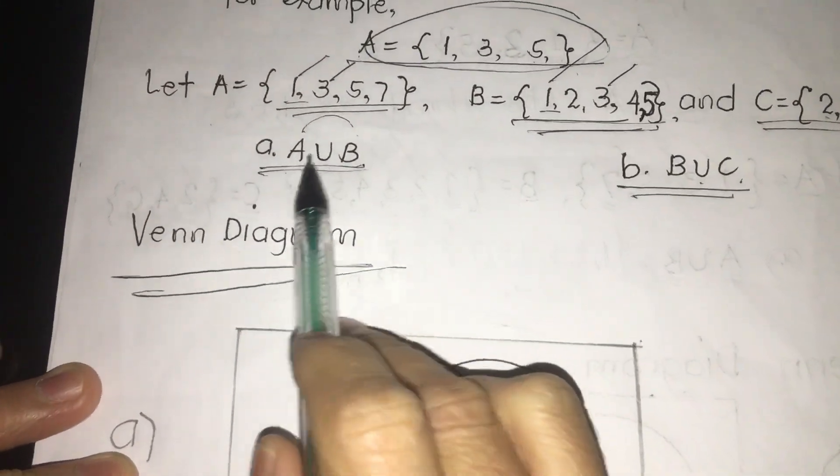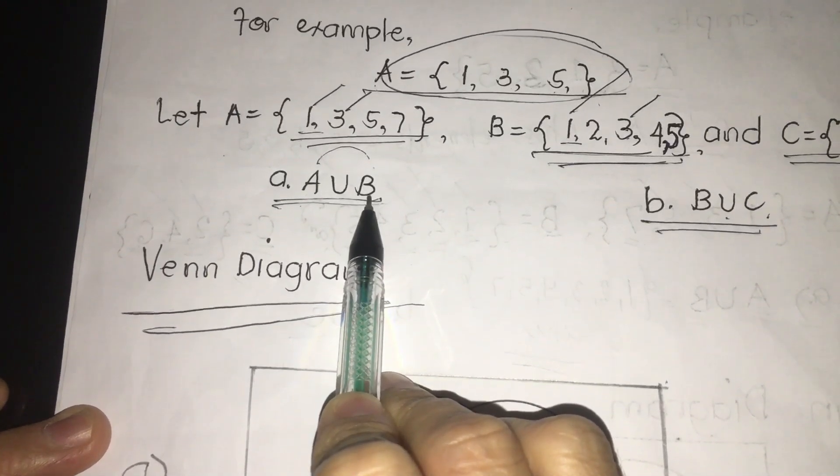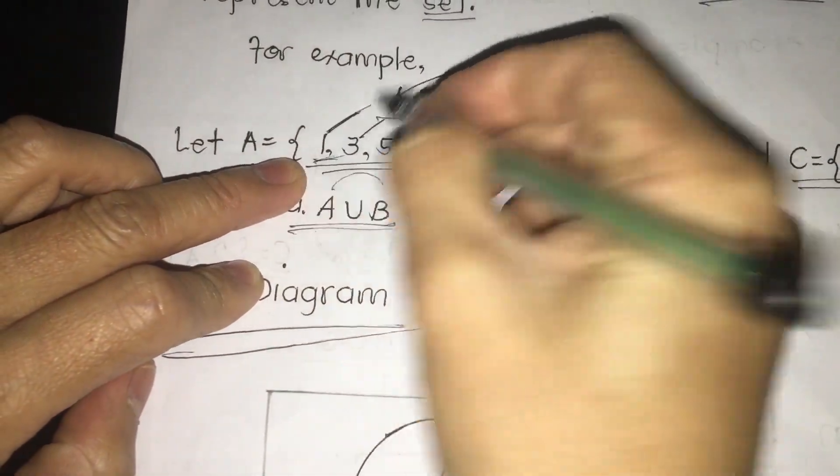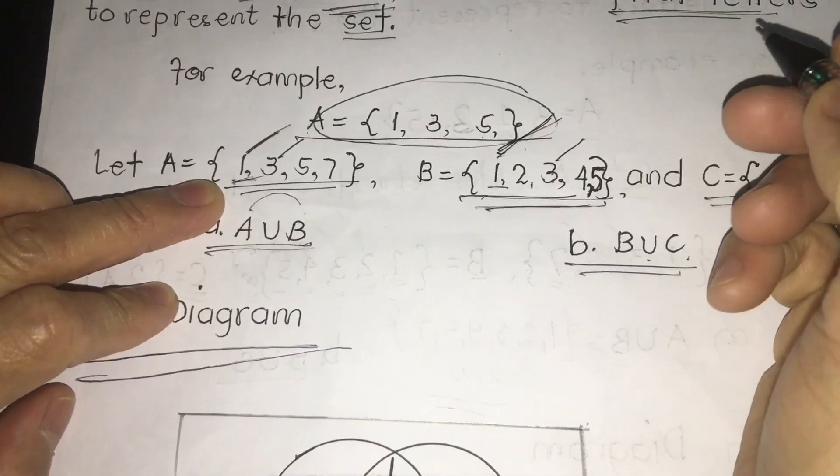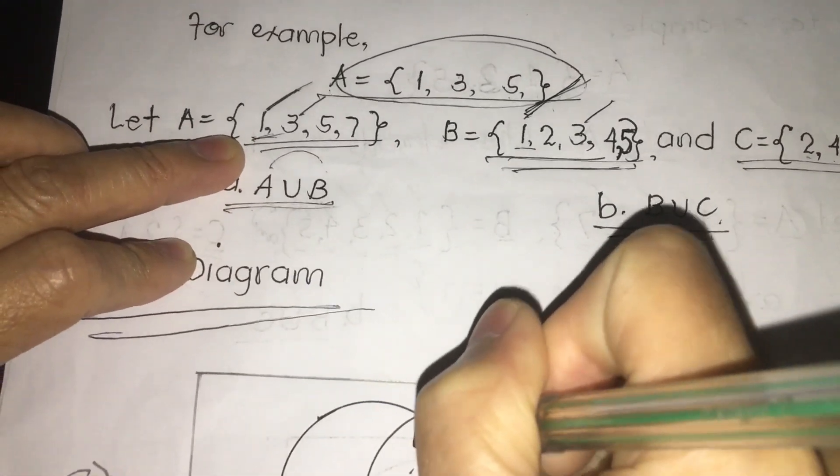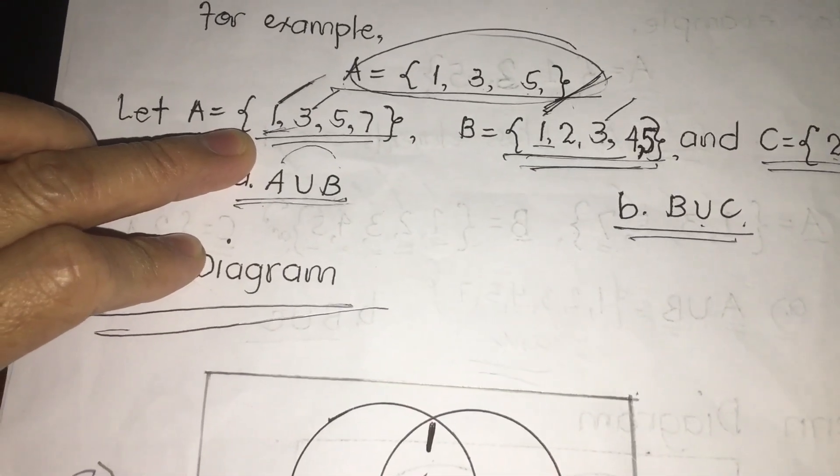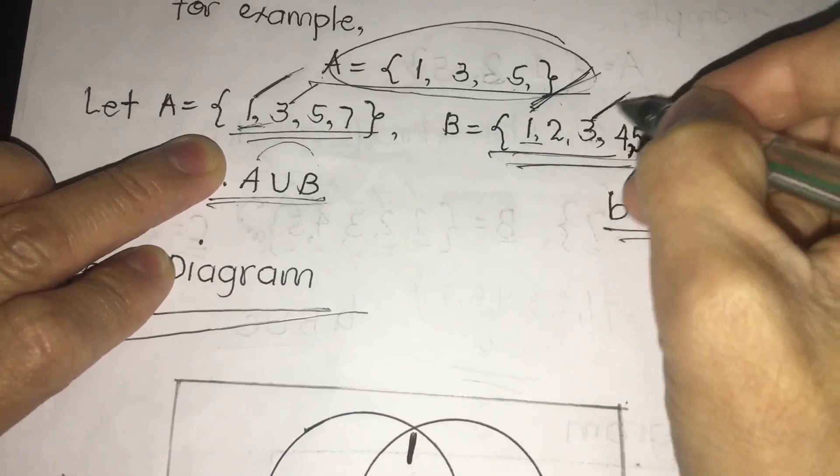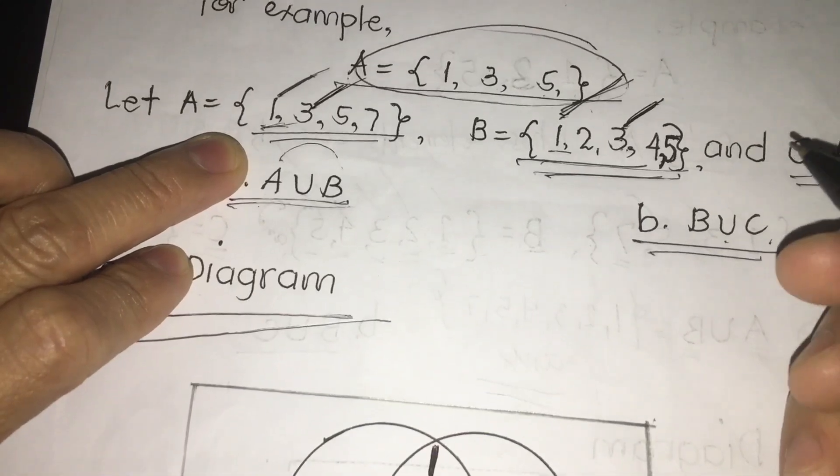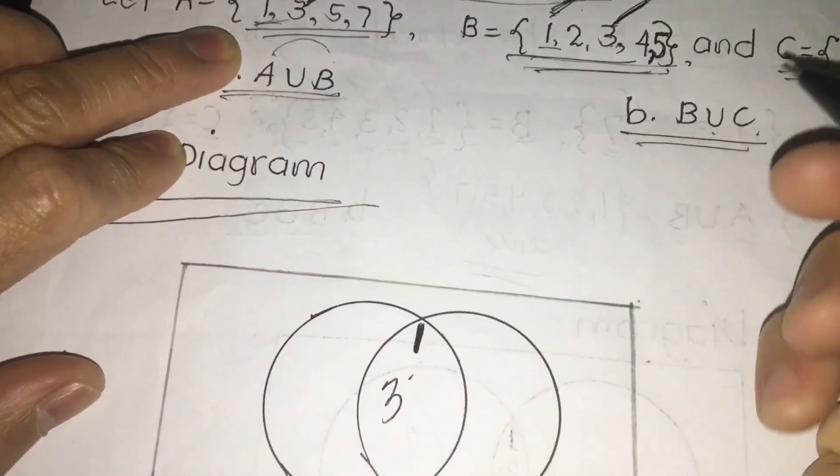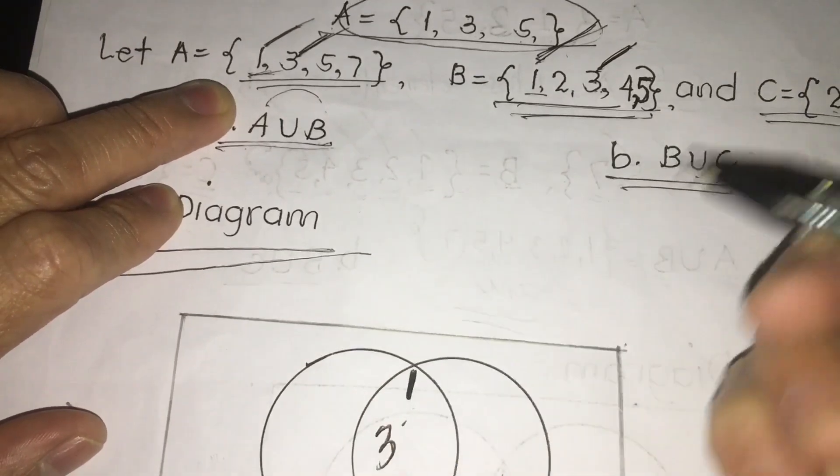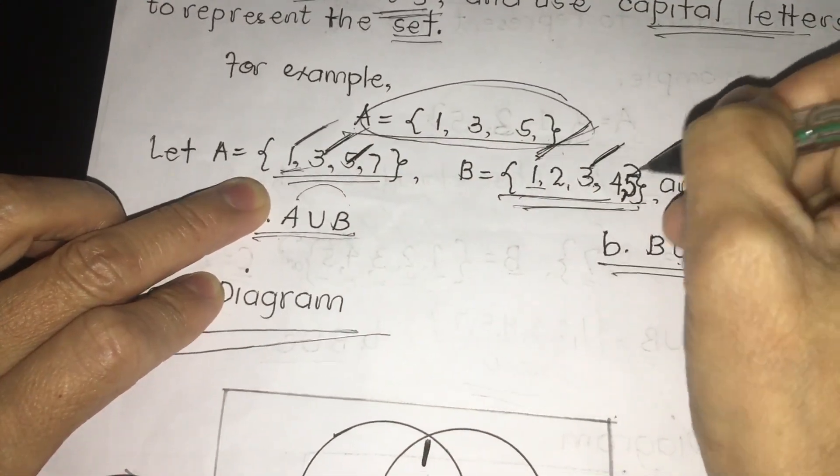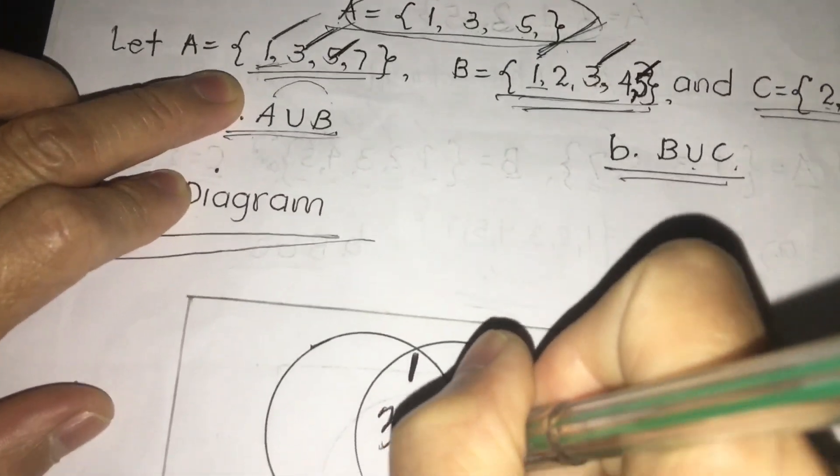Number 1, A is the union of B. So we're going to find out the common elements between A and B. In A, we have 1. In B, we have 1. It's common. So jot down 1 here in our Venn diagram. Next, 3 in A. We have 3 also in B, so we're going to put here 3. Next, what are the common? We have 5 here in A and we have 5 also in B. So I'm going to write 5.